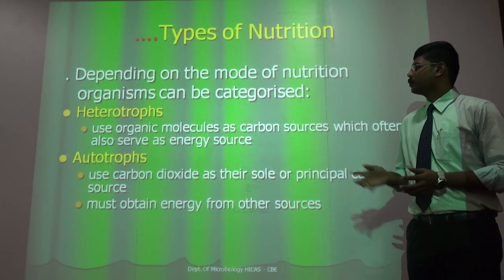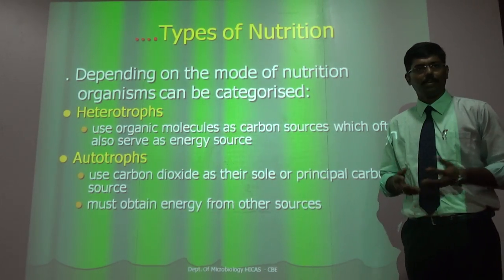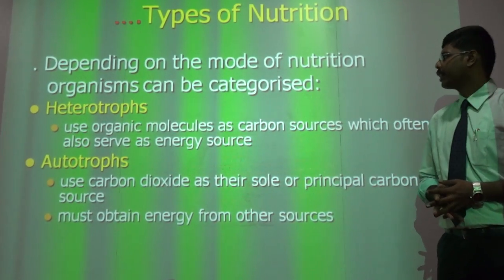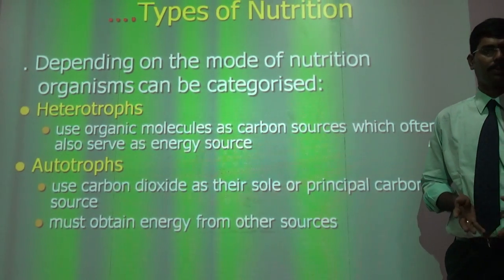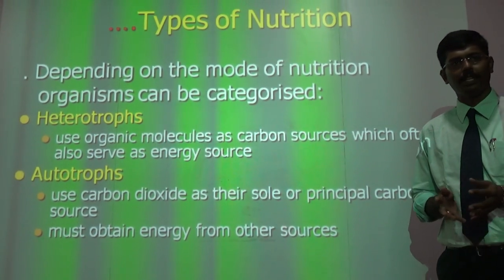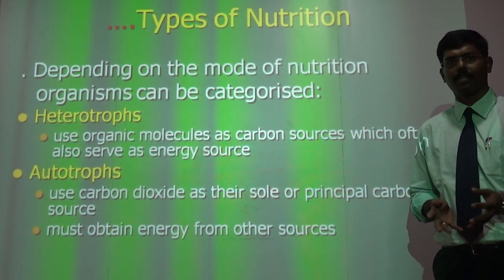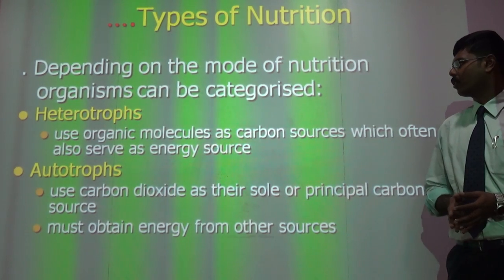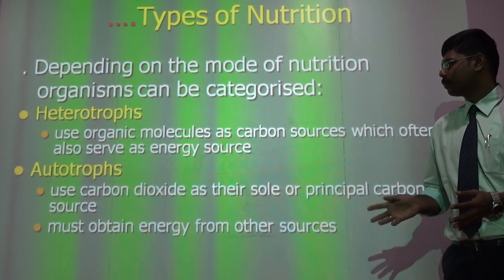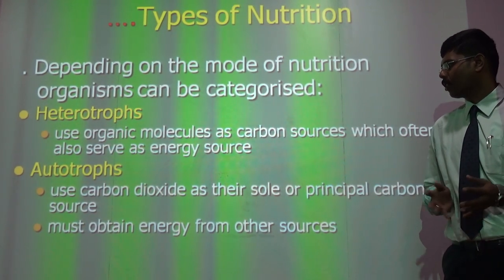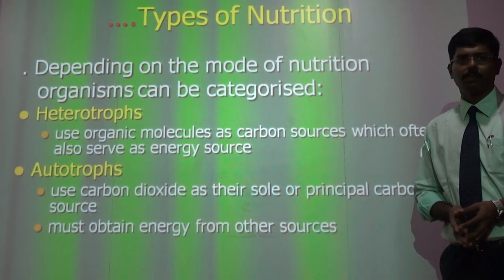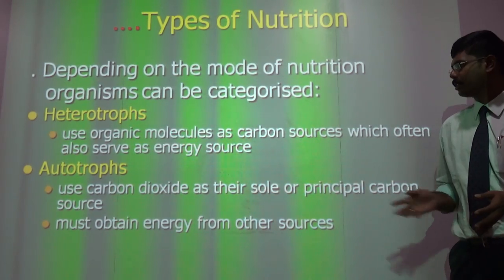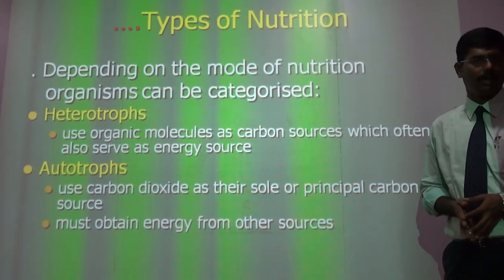Regarding types of nutrition, depending on the type, organisms can be categorized into heterotrophs, which use only organic sources like carbon, hydrogen, and oxygen; and autotrophs, which can live without these organic molecules — using sources such as carbon dioxide instead.